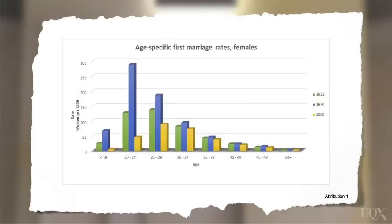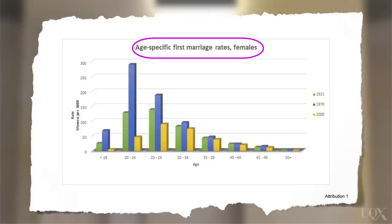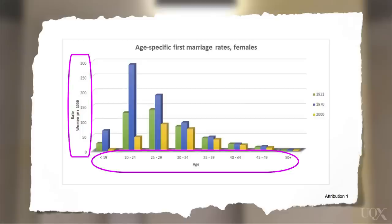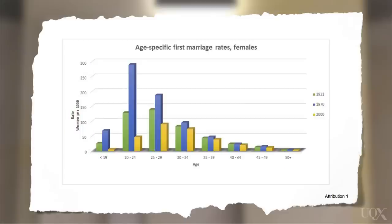This is an example of a bar chart. From the title, we can see that it's about the age that women got married for the first time. It has two axes: the vertical axis, which shows how many women per thousand got married, and the horizontal axis, showing the age that these women got married for the first time. The bars on the chart have three different colours, representing the three years that data is given.